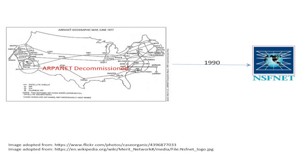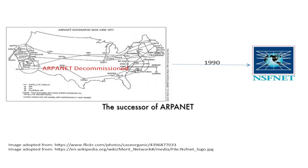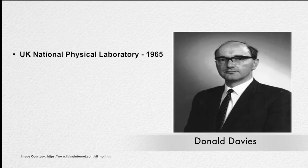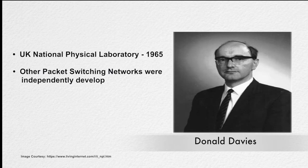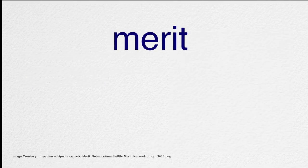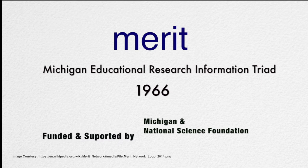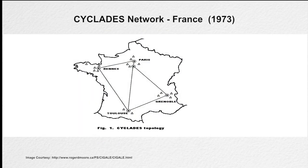NSFnet, the successor of ARPANET, became popular by the 1990s and ARPANET was decommissioned. In 1965, Donald Davis and his colleagues at the UK National Physical Laboratory independently discovered the idea of packet switching and later created a small-scale packet switching version of ARPANET. Michigan Educational Research Information Triad formed Merit Networks in 1966, funded and supported by the State of Michigan and the National Science Foundation. France also developed a packet switching network known as Cyclades in 1973.